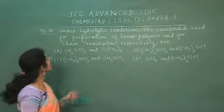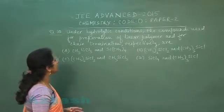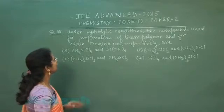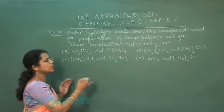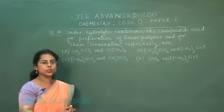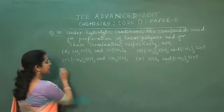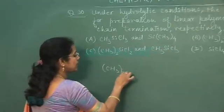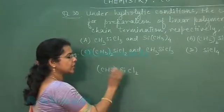Next question of this section is question number 13. Under hydrolytic conditions, the compound used for preparation of linear polymer and for chain termination respectively are. These compounds are used for the preparation of a linear polymer called silicone. To prepare silicone, the reactant should be (CH₃)₂SiCl₂.